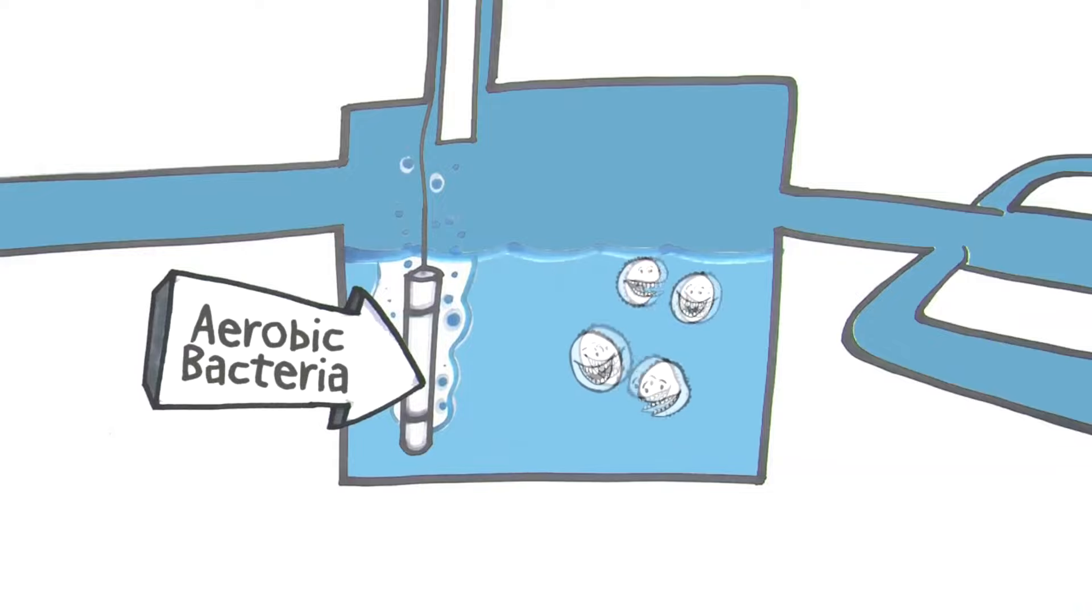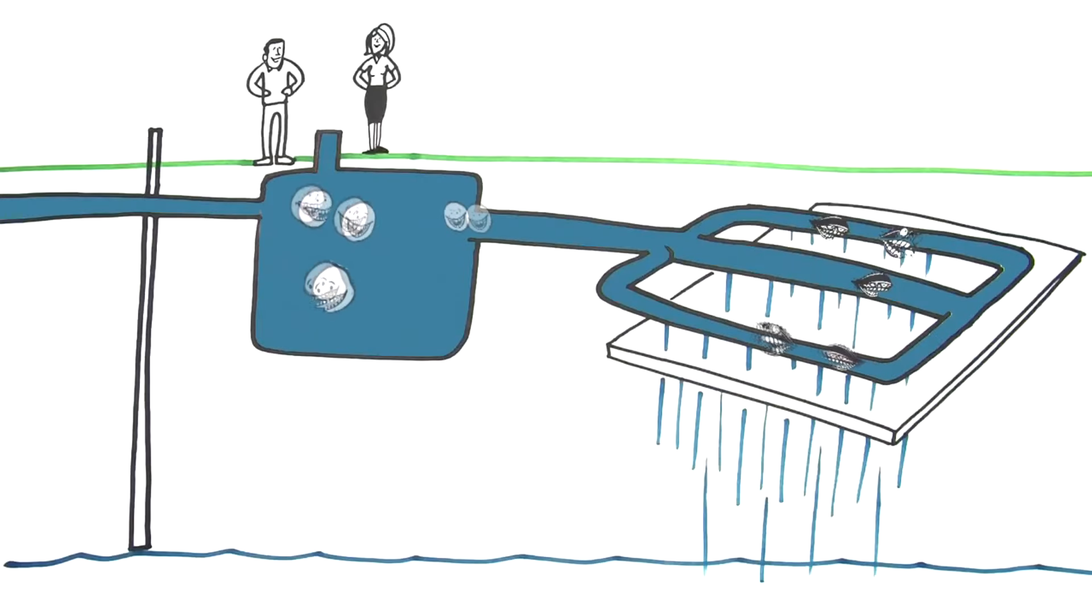Aerobic bacteria, unlike their anaerobic counterparts, flourish with oxygen and do not produce the dreaded black slime. In fact, these bacteria feast on it, effectively eliminating the root cause of your septic system's failure.